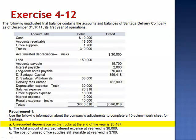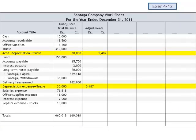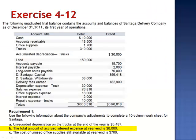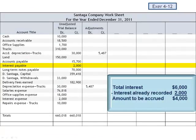Letter A states that unrecorded depreciation on the trucks at the end of the year is $5,487. The adjusting entry is a debit to depreciation expense and a credit to accumulated depreciation. Letter B states that the total amount of accrued interest expense at year-end is $6,000. The current balance in interest payable is $2,000; we want the balance to be $6,000, so we need to accrue $4,000 in interest — debit interest expense and credit interest payable.